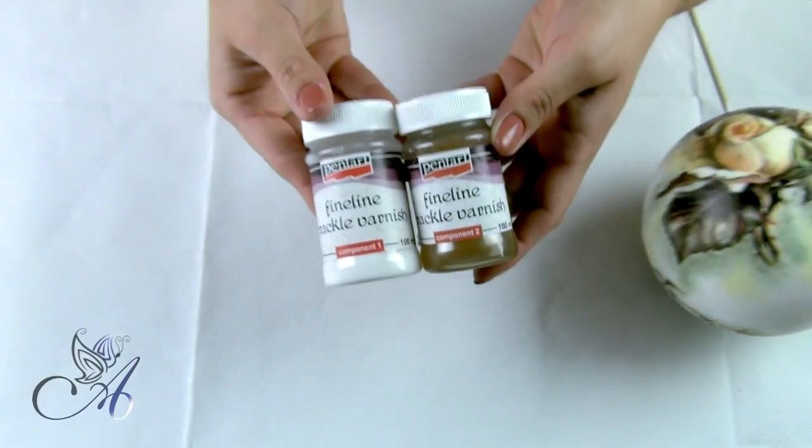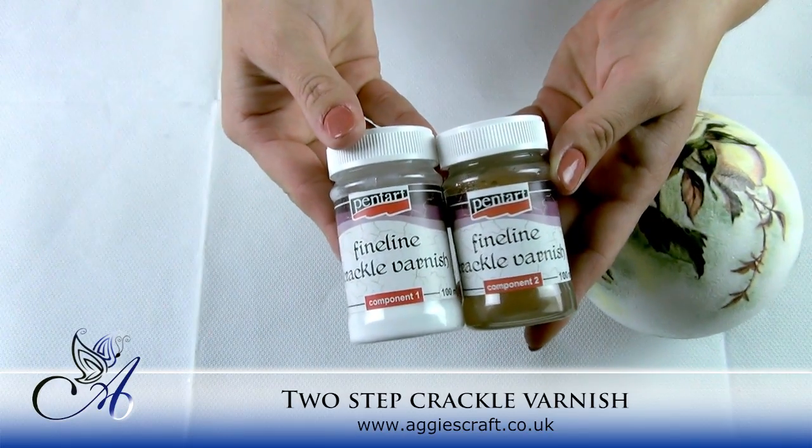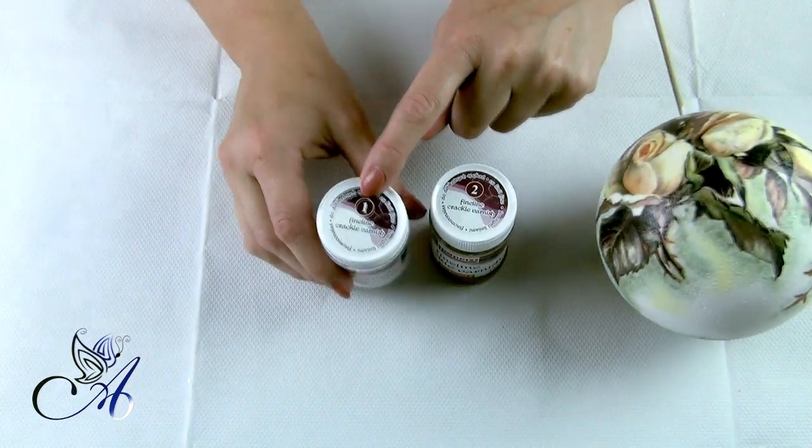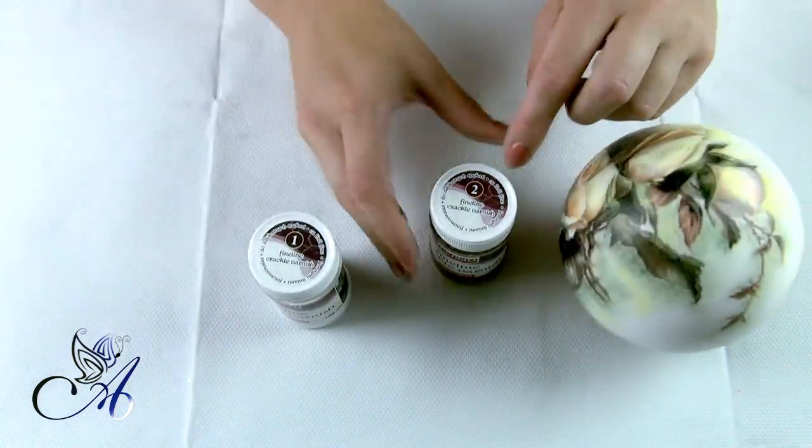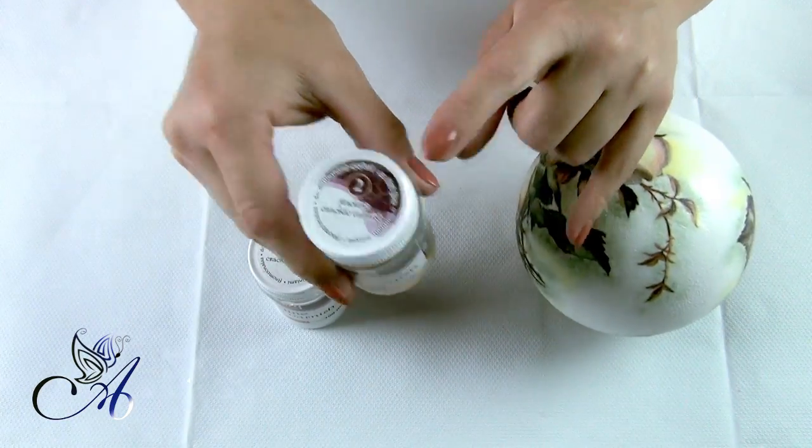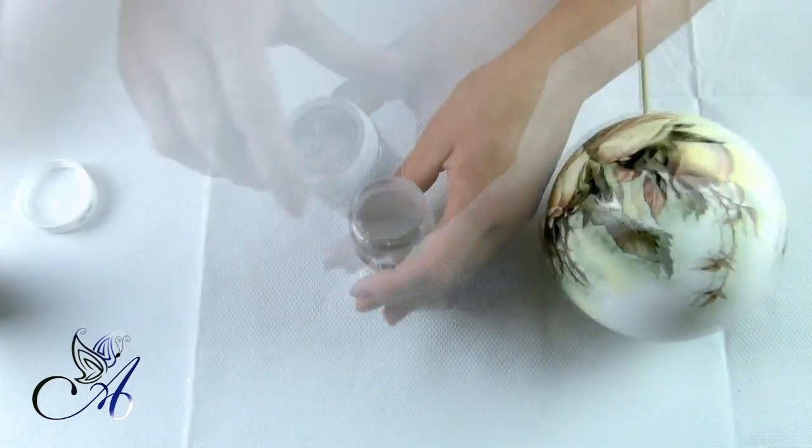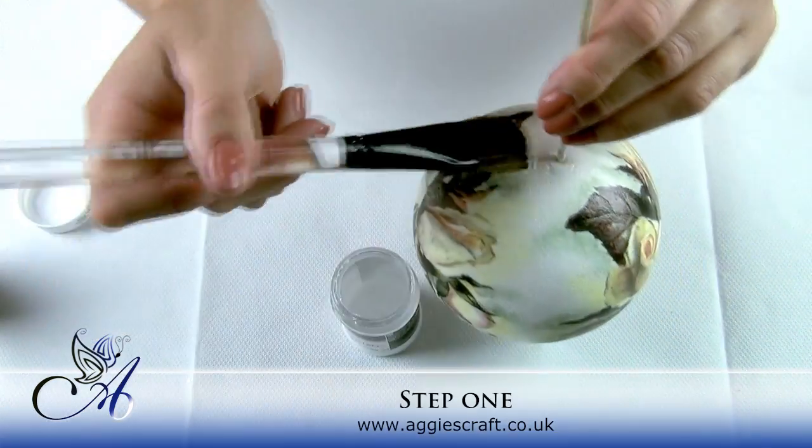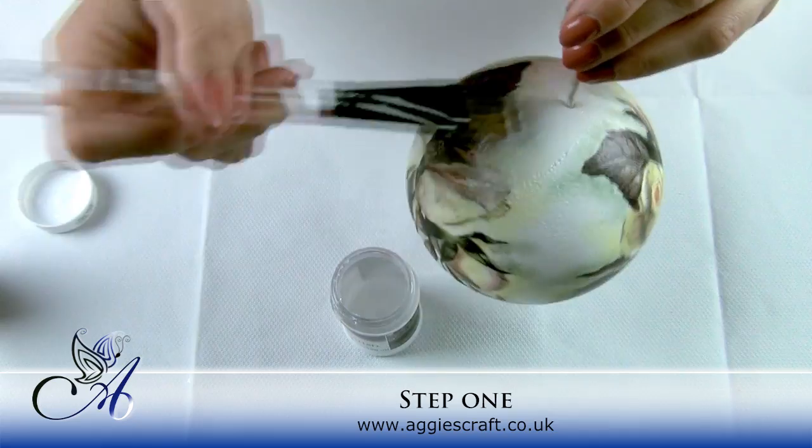When everything is properly dry we can start adding crackle medium. Today I will be using 2-step crackle. Component 1 is milky white and we need to apply it first. Make sure you cover your bauble evenly with a really soft brush to avoid strokes.